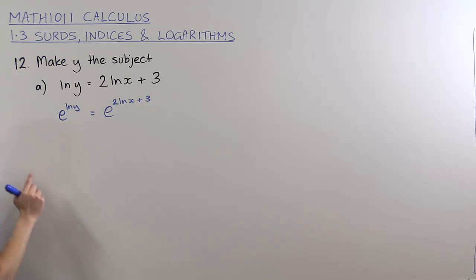The reason I did that is because e to the power of log base e of y is just y, because logarithms and exponentials are inverse functions of each other. That's why I did that in the first place.